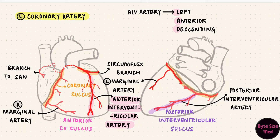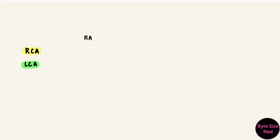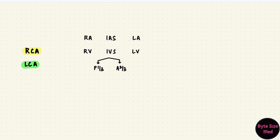One thing we need to know is the distribution of these vessels and what parts of the heart they supply. Here's a simple version as a starting point. We have the right and left coronary arteries. The chambers are: right atrium, left atrium, right ventricle, and left ventricle. Between the atria is the interatrial septum; between the ventricles is the interventricular septum, which we divide into an anterior two-thirds and a posterior one-third. The conduction system includes the sinoatrial node, the atrioventricular node, the atrioventricular bundle, and the bundle branches.